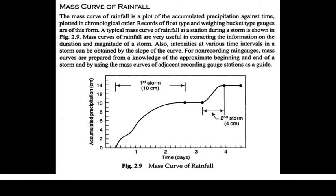For recording-type rain gauges we don't have to prepare this curve because it directly gives us the accumulated depth; however, for non-recording type rain gauges we have to prepare this curve. From this curve you can identify at what time there was no rain, when a storm started, when a second storm started, and so on. Most importantly, where the slope is largest, the intensity of rain is very high, and when the curve is flat it shows there is almost no rainfall in that time period.